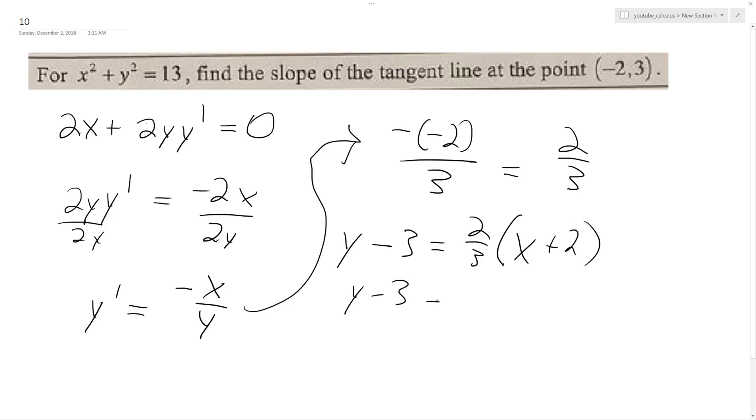y minus 3 equals 2 thirds x plus 4 over 3, and then I add 3, so that's going to be adding 9. So ultimately what I get... Oh,